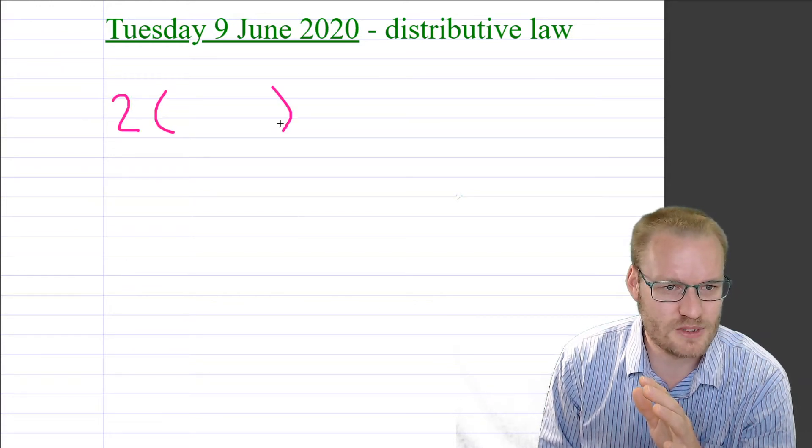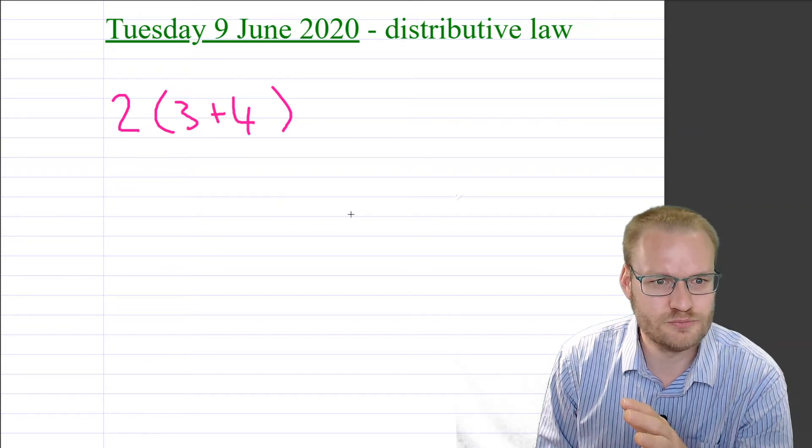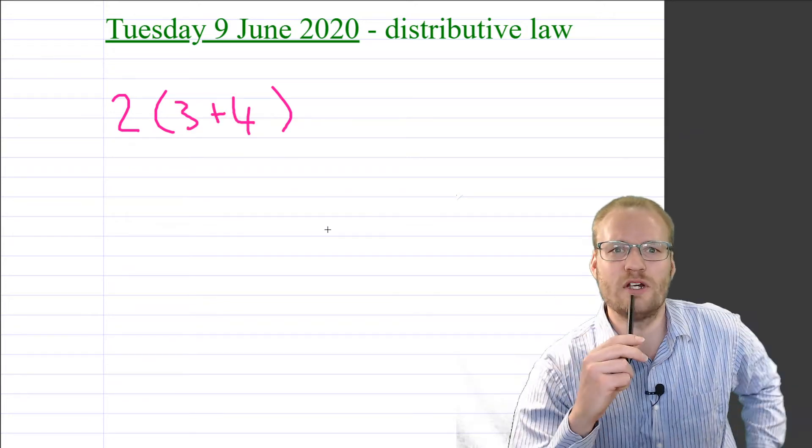So we've got, let's say I gave you this to simplify. What's 2 times—so next to the brackets means times—3 plus 4. In fact, work it out. What do you think the answer is?